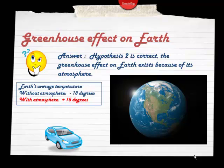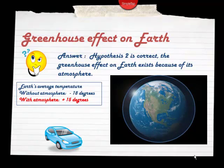So hypothesis two is correct — the greenhouse effect on Earth exists because of its atmosphere. We do have closed windows. The Earth's average temperature without an atmosphere would be minus 18 degrees, but with the atmosphere it's a nice plus 15 degrees. Life on Earth requires liquid water, and at minus 18 degrees water is solid ice, whereas at plus 15 degrees water would be liquid. So it's a good thing we have some greenhouse effect.